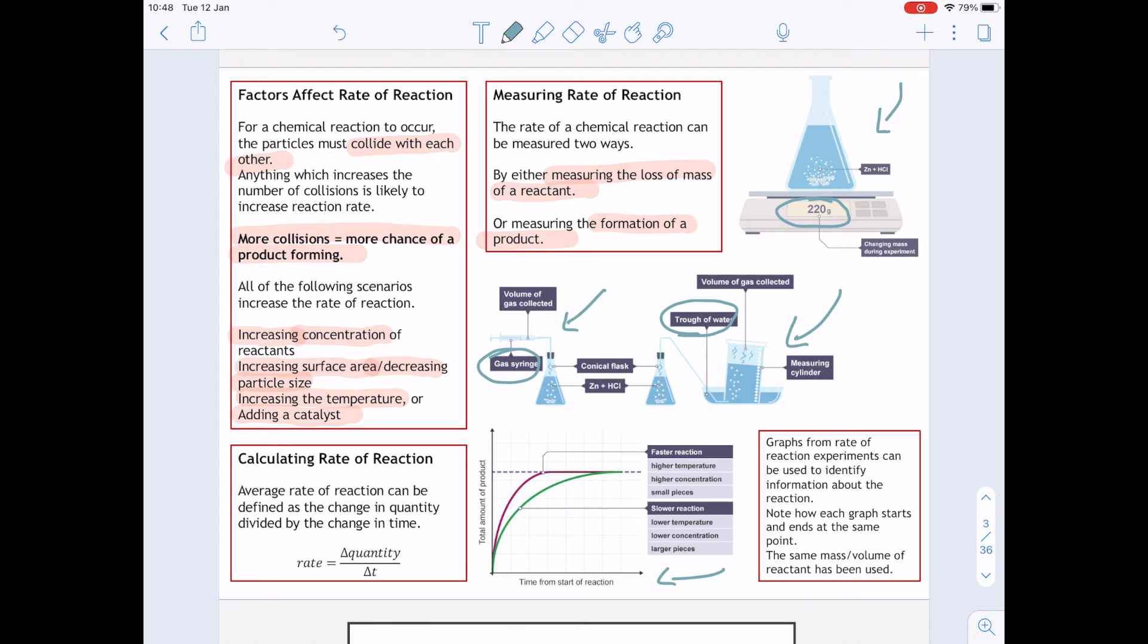Now your graphs from your rate experiments are usually used to identify information about the reactant. Now note as well if you have a look here at the end, they start at the same point and they end at the same point. What that means is the same mass or volume of reactant has been used. Because if I have a look at this one I start at the same but I maybe finish roughly half from the other one, what that means is I've got half the amount of the other one. So say for example the pink and the green one was one gram of a metal, the blue one underneath could be 0.5 grams of your metal.